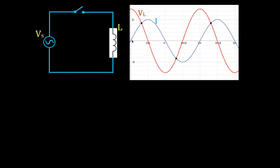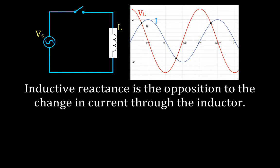These are the waveforms we get for the current. The blue line represents the current through the circuit, and the red line represents the voltage across the inductor. Inductive reactance is the opposition to the change in current through the inductor. Inductors do not like to have the current through them changed. When the current does change, it will react by inducing a voltage across the inductor, and according to Lenz's law, the polarity of the induced voltage will be such that it tries to maintain the current at a constant rate.